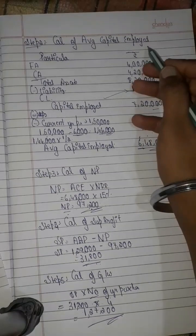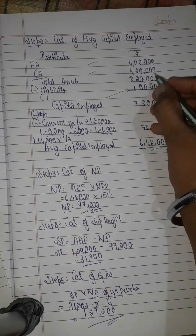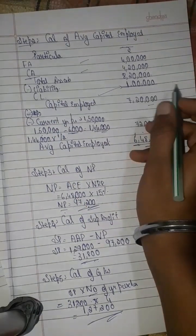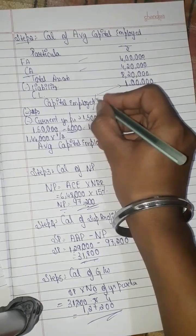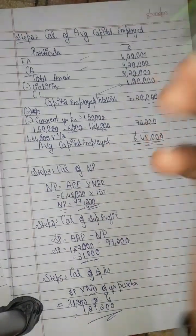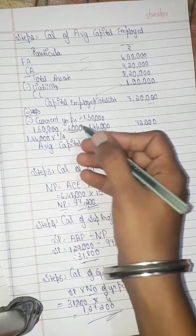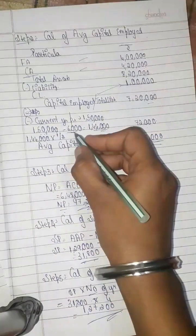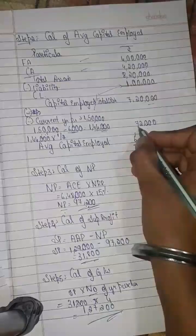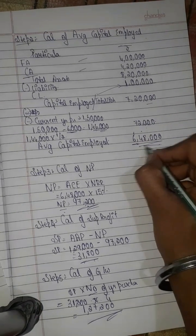Recap of Step 2: capital employed — add fixed assets and current assets to get total assets, then minus liabilities to get capital employed, then minus half of current year profit, and also minus government bond amount of 6,000, to arrive at average capital employed of 6,48,000. Step 3: normal profit equals average capital employed into NRR percentage.